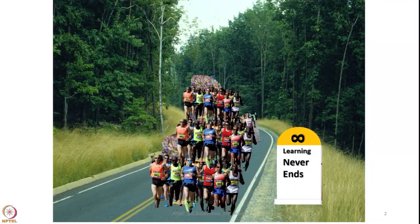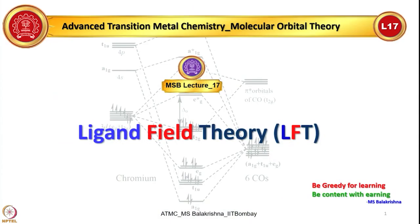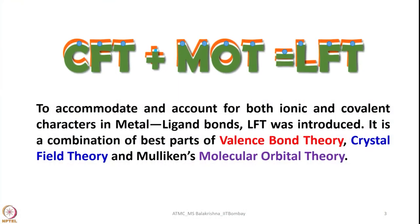So with this let us continue learning chemistry, especially chemistry of transient elements. Today's focus would be on ligand field theory. Until last lecture I was discussing about crystal field theory and its utility in understanding coordination chemistry, and why people switched to ligand field theory. Let us try to understand — to accommodate and account for both ionic and covalent characters in metal-ligand bonds, ligand field theory was introduced. It is a combination of the best parts of valence bond theory, crystal field theory, and Mulliken's molecular orbital theory.